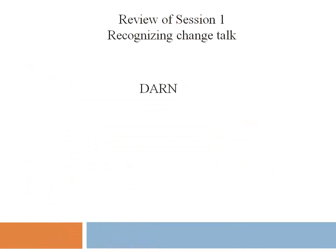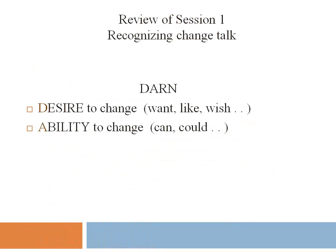The last piece from last session was the DARN mnemonic. Desire means getting your client to state the emotional reasons they want to change. Ability is what they can actually do — skills they have. Reasons is the intellectual piece, like knowing that if I don't change my eating habits I'll develop diabetes, or if I don't stop smoking I'll get cancer. These are logical, proven reasons for change.